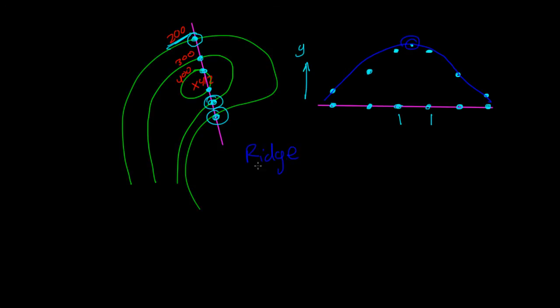Those were a couple of examples on how to identify a ridge and a valley. We used two different methods: the water droplet method and the cross-section method. I'll see you in the next video.